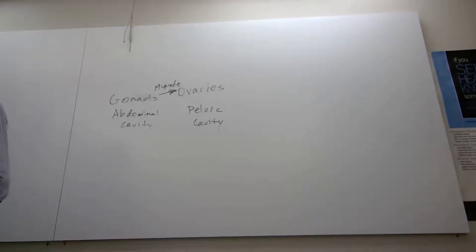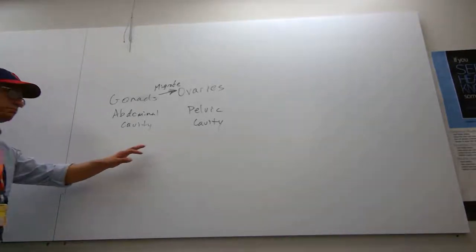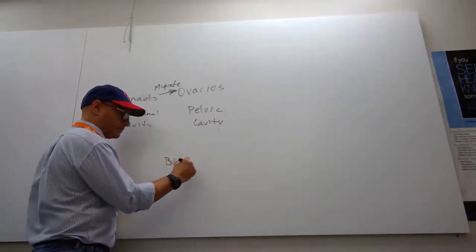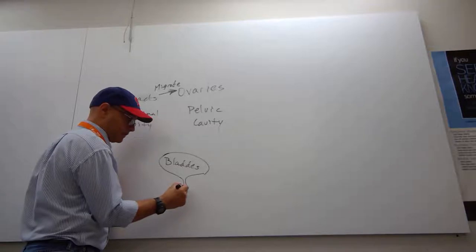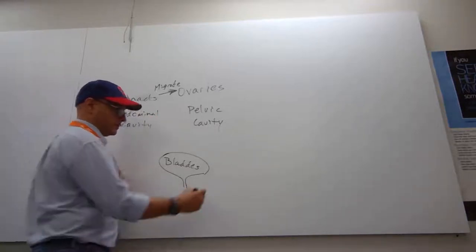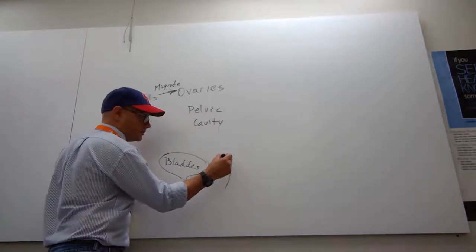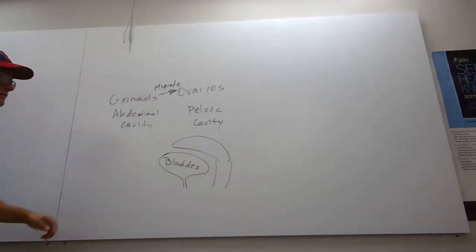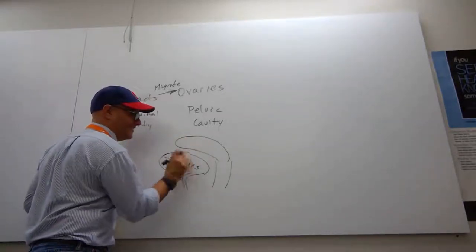And the floor of the pelvic cavity, or the floor of the abdomen, because the floor of the abdomen is this parietal peritoneum that comes over the top of the organs. And those organs are the bladder.